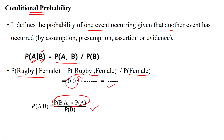Probability theory is very useful to find out values where uncertainty exists in deep learning and machine learning applications. Thanks for watching.